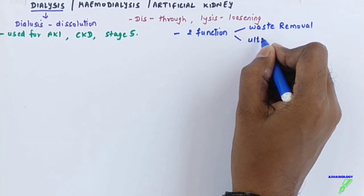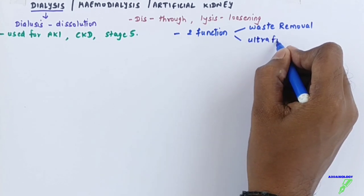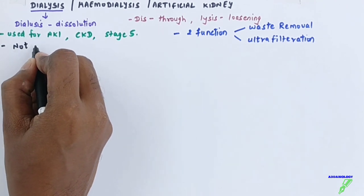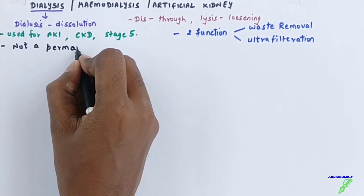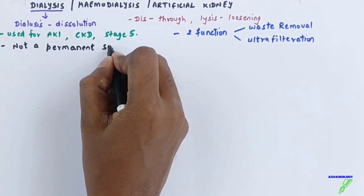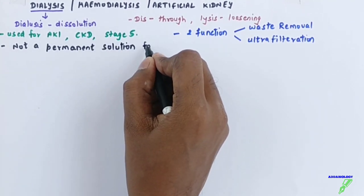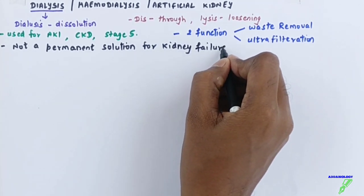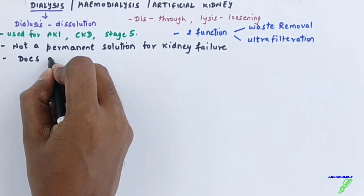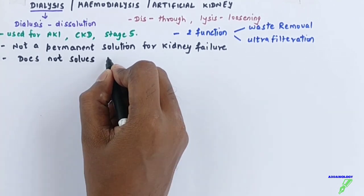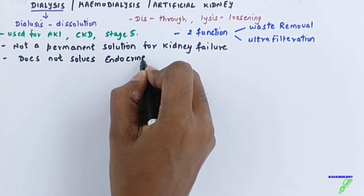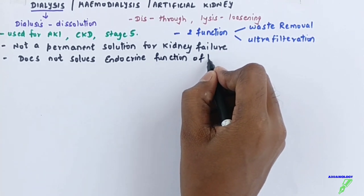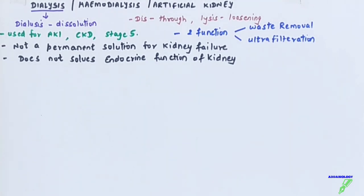The dialysis machine helps in two ways: first, removal of nitrogenous waste, and second, ultrafiltration. However, dialysis is not a permanent solution for kidney failure. It removes nitrogenous waste but does not solve the purpose of hormones, because the kidney also performs an important endocrine function apart from forming urine.